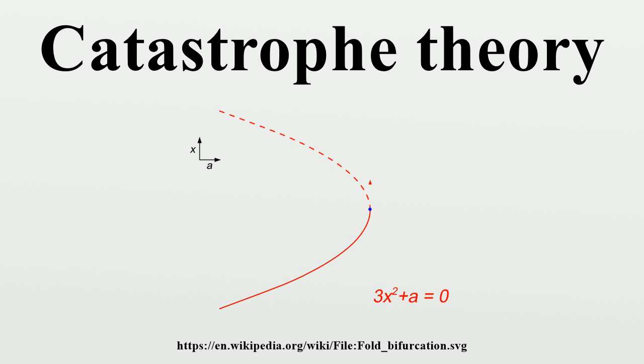Potential functions of two active variables. Umbilic catastrophes are examples of corank 2 catastrophes. They can be observed in optics in the focal surfaces created by light reflecting off a surface in three dimensions and are intimately connected with the geometry of nearly spherical surfaces. Thom proposed that the hyperbolic umbilic catastrophe modeled the breaking of a wave and the elliptic umbilic modeled the creation of hair-like structures.